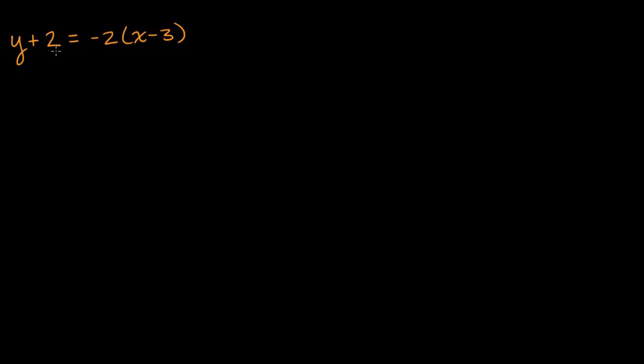We've got the equation y plus two is equal to negative two times x minus three. What I want to do is figure out what is the slope of the line that this equation describes. And there's a couple of ways that you can approach it.